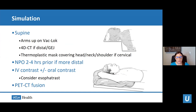Before any patient starts radiation treatment, they come in for a radiation planning session or simulation. During simulation, we position the patient the same way they'll be treated and take a CT scan. For esophageal cancer, patients lie supine with arms up on a vac-lok — a bean bag with air sucked out that conforms to the patient's shape, providing both comfort and immobilization. This arms-up vac-lok technique is used for patients with mid and distal esophageal cancers.